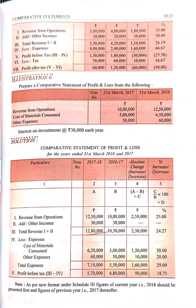Total expenses: current year 12 lakh 80,000 and previous year 10 lakh 30,000, giving an absolute change of 2 lakh 50,000. Profit figures: current year 5 lakh 70,000 minus previous year 4 lakh 80,000 gives a change of 90,000.